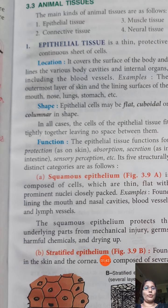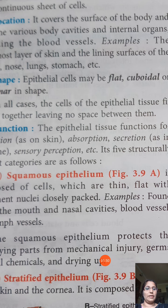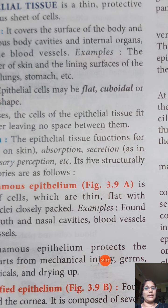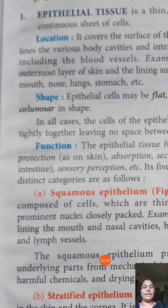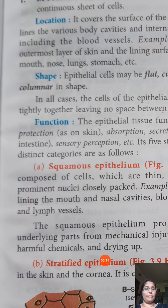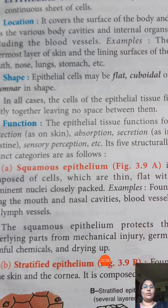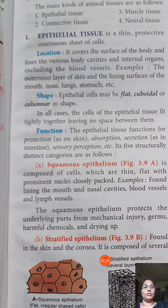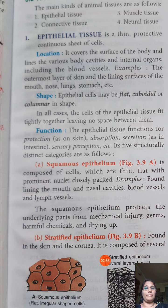The main functions of epithelial tissue are protection — as our skin protects our body — absorption, such as intestinal epithelial cells absorbing nutrients, and secretion. Some cells in the intestine secrete substances, and the ear wax inside our ear is a secretion of epithelial cells. Epithelial cells also perform sensory perception; cells of the tongue and nose perceive smell and taste.